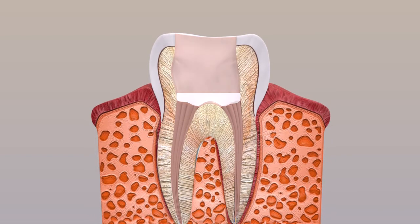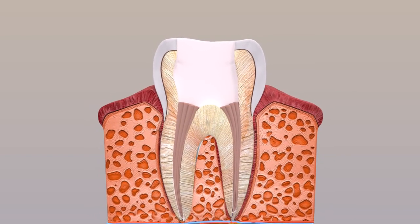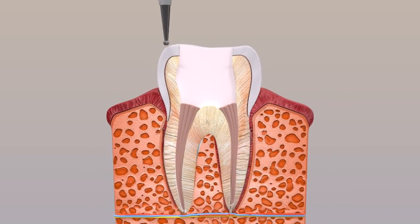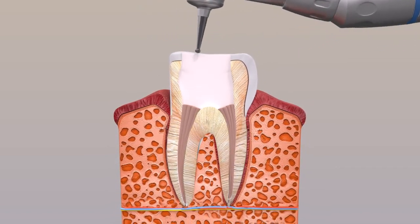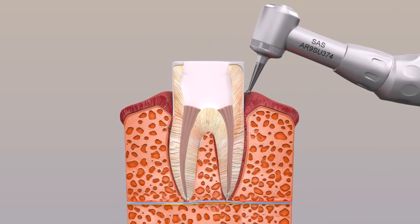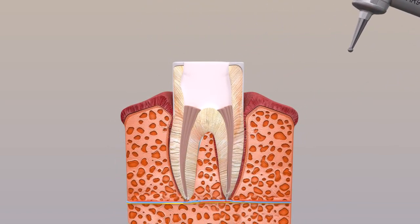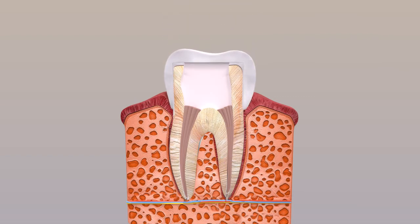The tooth is then cut into a shape to receive a crown over it, to protect it and to give it the look of a healthy, perfect tooth. Finally, the crown is cemented into place to complete the RCT process.